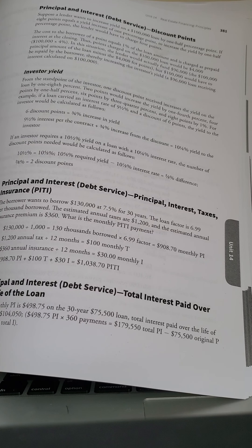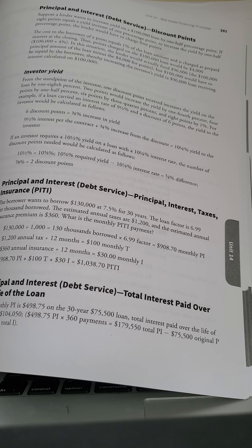Now, this isn't in your book, but how much would those two points cost if your loan was $100,000? Two percent of $100,000 is $2,000.